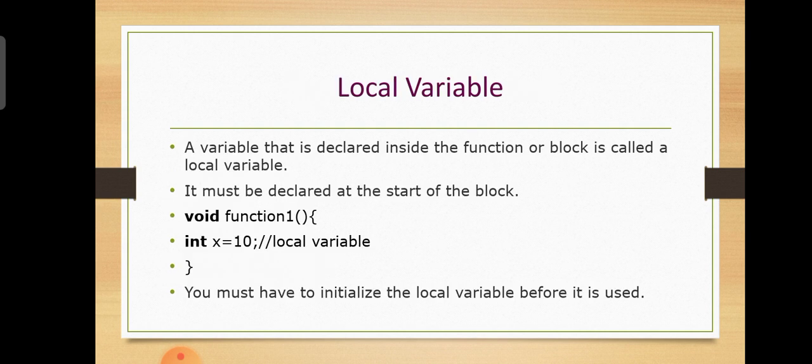First, the Local variable. A variable that is declared inside a function or block is called a Local variable. We must declare it at the start of the block. You must initialize the local variable before it is used.